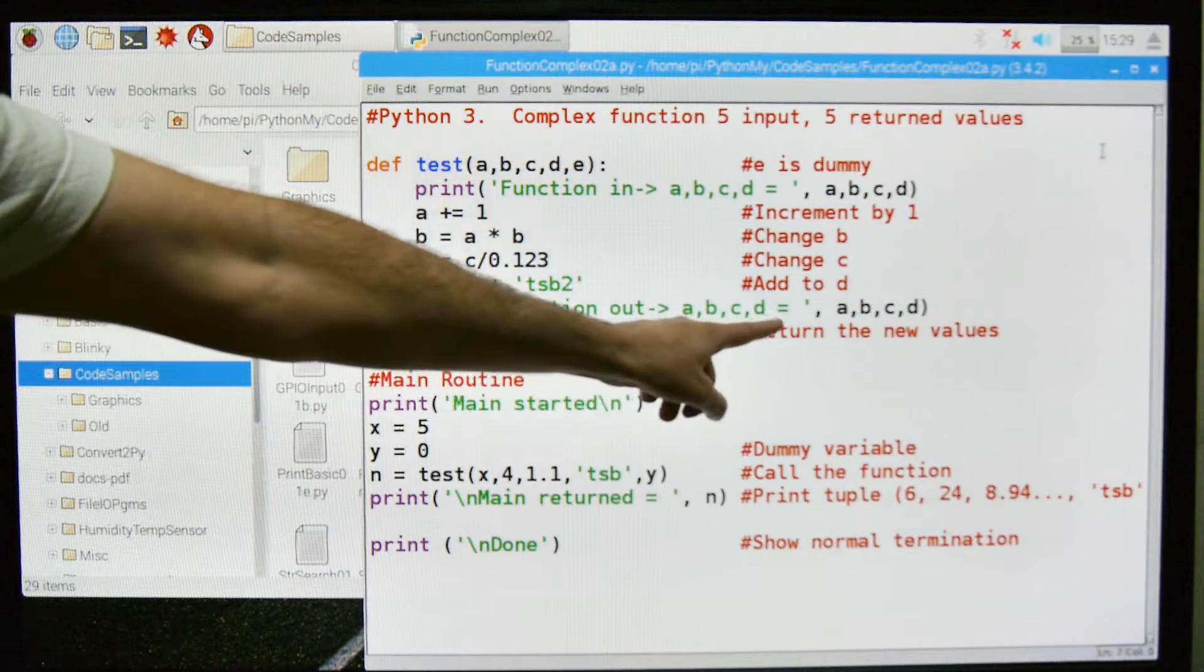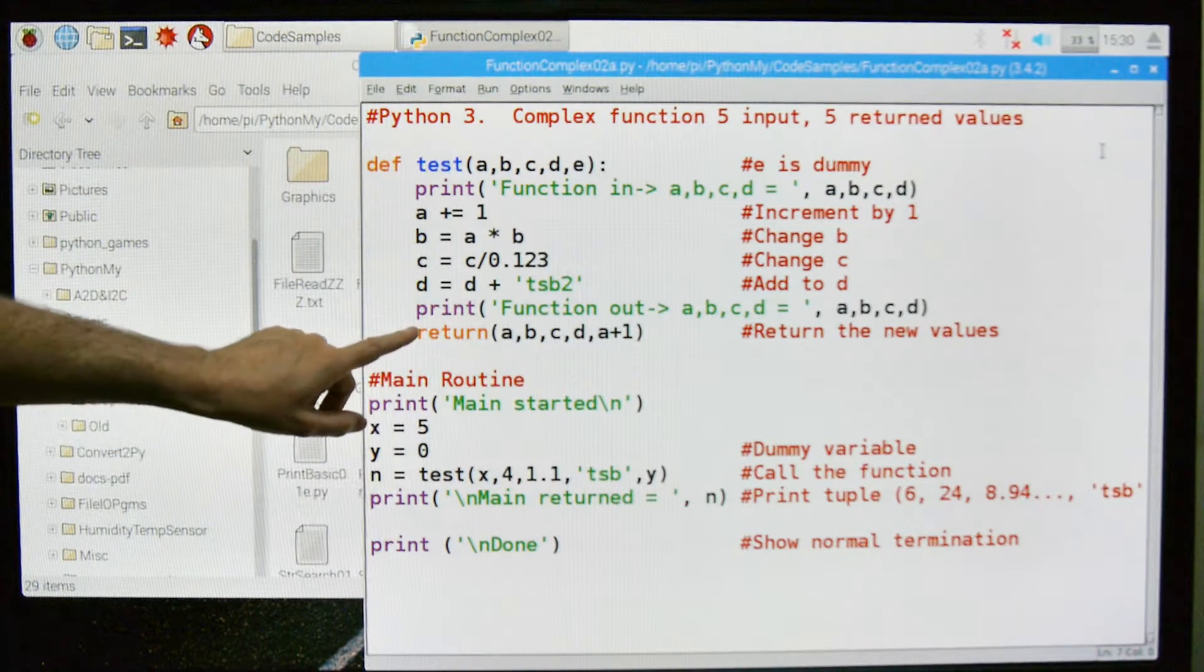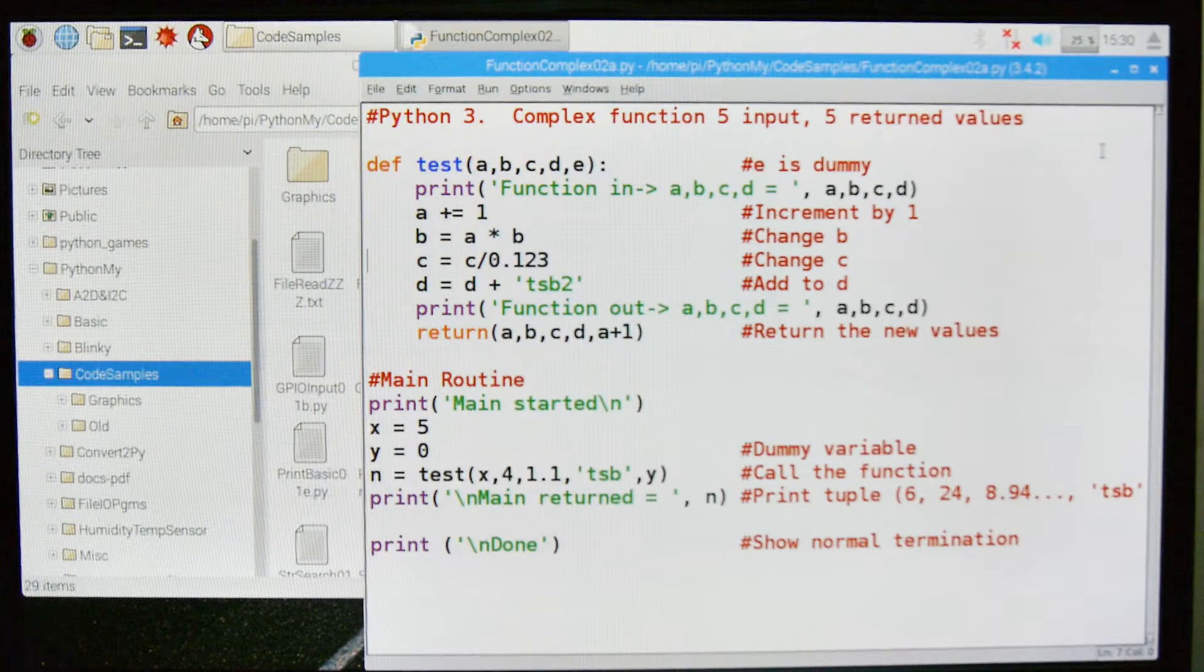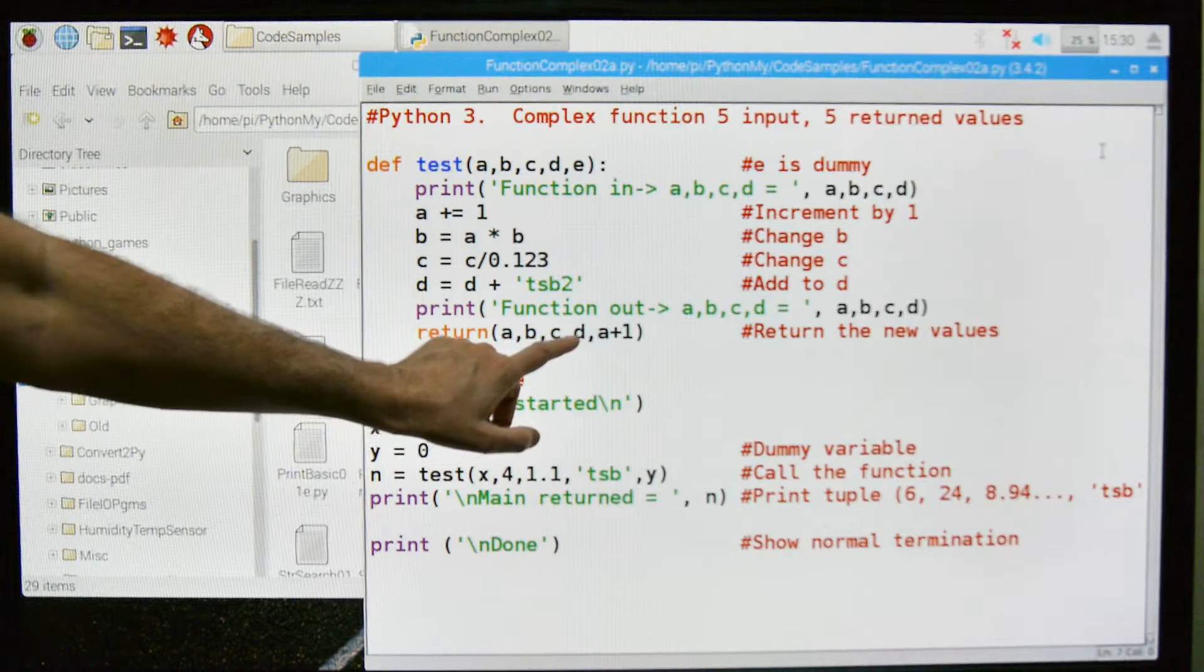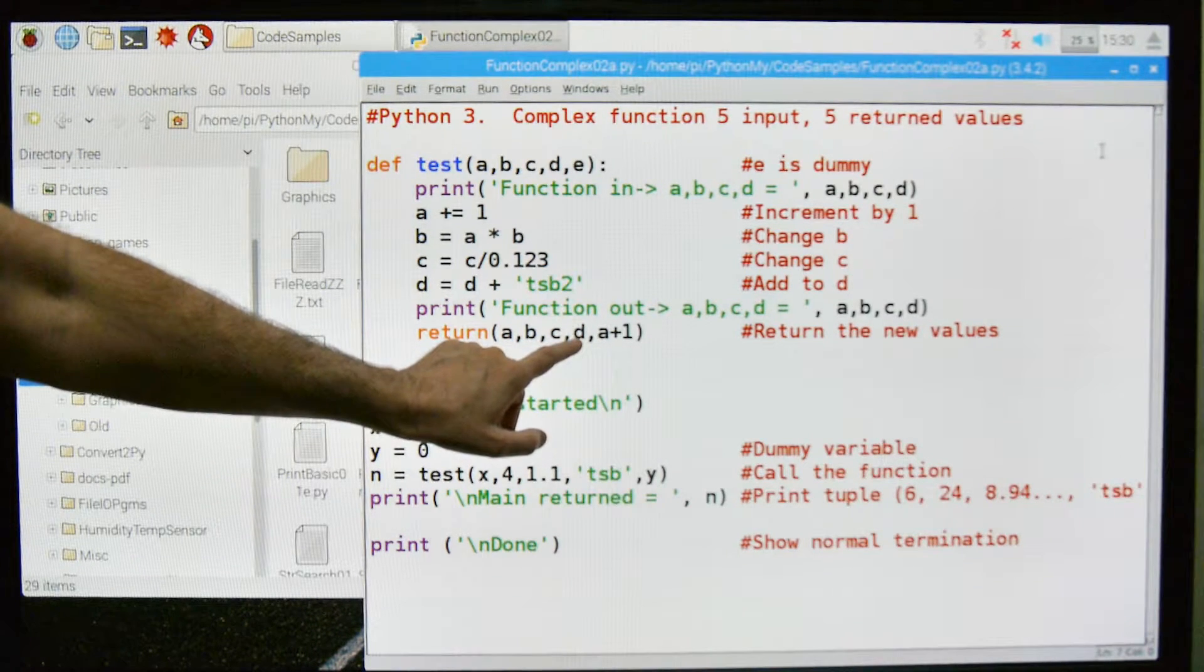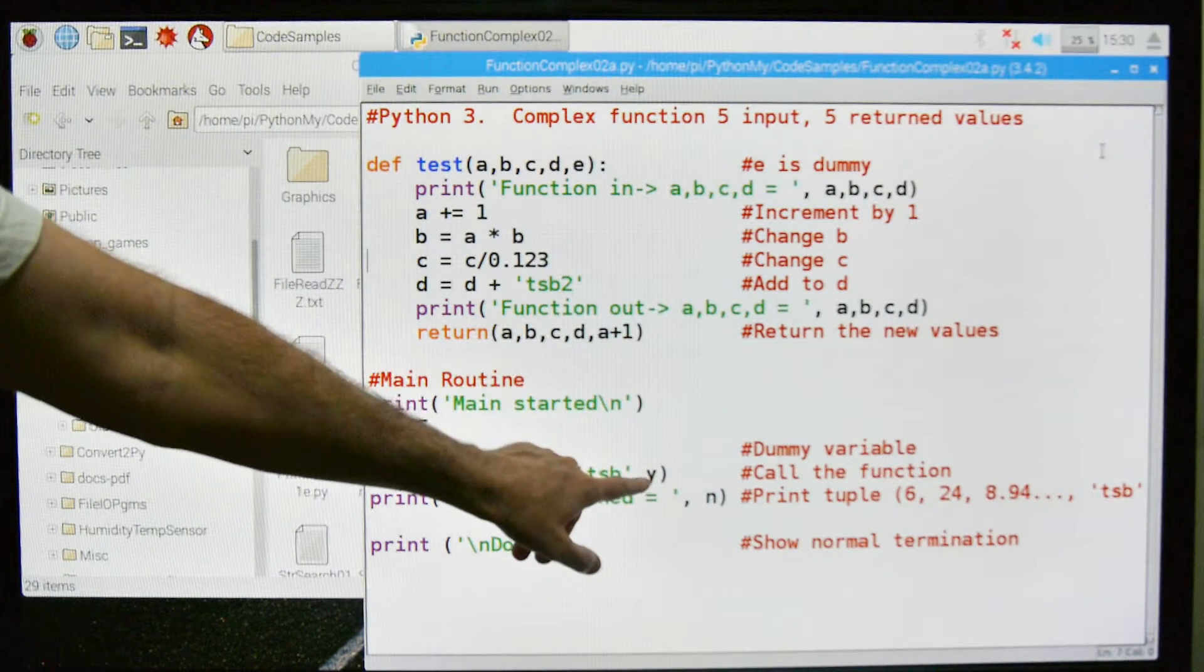So then down here, we're going to print out the results of doing this stuff, and then we're going to return it back to the main calling routine, which is down here. So we're going to return these variables, a, b, c, d. You notice I'm not returning e, I'm going to return a plus 1, and it's going to come back here to the y.